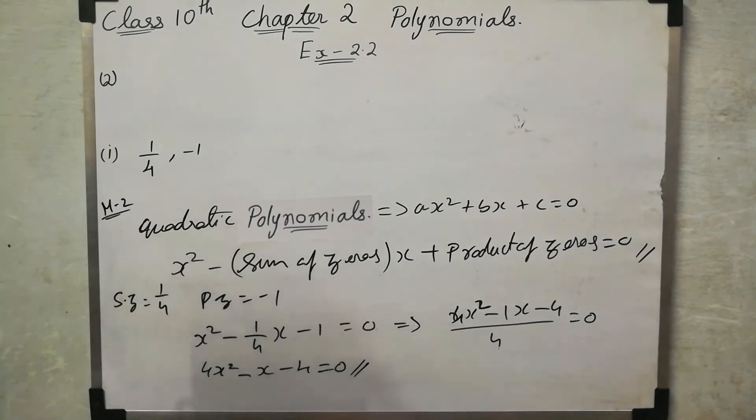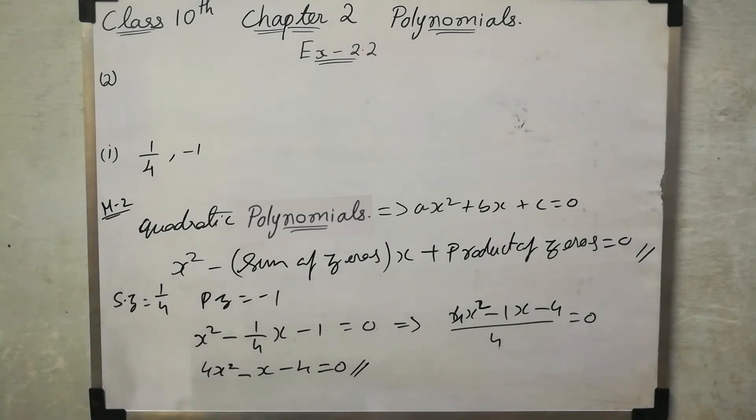So the answer from method 1 and method 2 are the same. This is the second method. So what method is easy to follow?